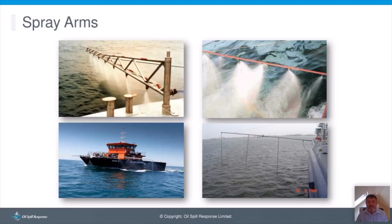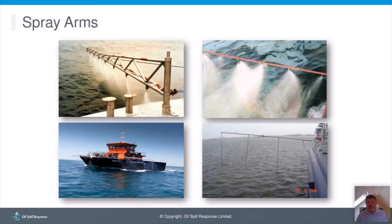Most pre-designated dispersant application vessels have spray arms fitted that fold away when not in use. The spray nozzle must be close to the oil-water surface so the dispersant arrives in suitably sized droplets at suitable concentrations. Ideally, droplet size should be between 300 and 800 microns — too large risks passing through the oil layer, too small may not penetrate or may blow away. Where arms cannot be mounted at suitable height, drop-down nozzles can be attached. For surface-applied dispersants, the planning dispersant-to-oil ratio is usually 1:20, adjusting on scene depending on oil weathering and environmental conditions.